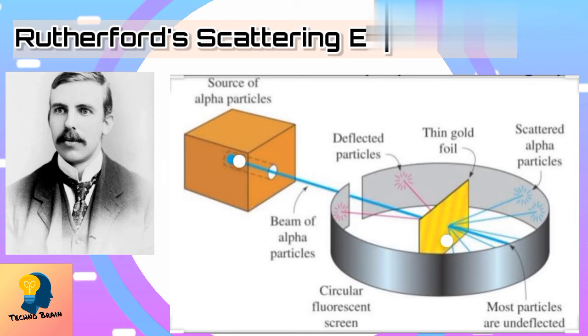He observed that some of the alpha particles would get reflected from the gold foil, most of the alpha particles get deflected from the gold foil, and one out of 20,000 alpha particles get bounced back in the direction opposite to the original path.